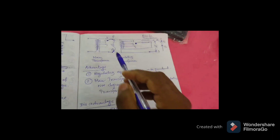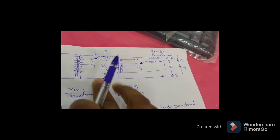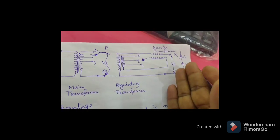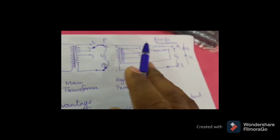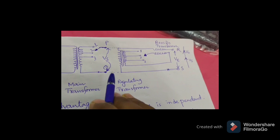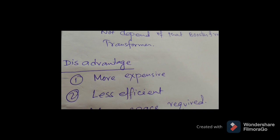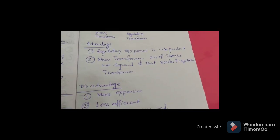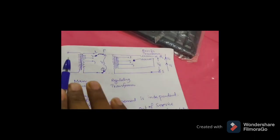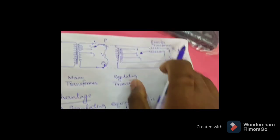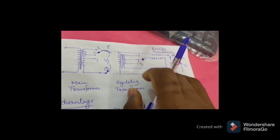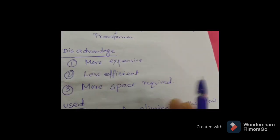There are also disadvantages. This system configuration is more expensive and also less efficient. There are more losses because the output voltage of the main transformer has no losses, but due to the far line, lots of voltage drops and power losses occur. Additionally, more space is required — we must install the main transformer, then far away install the regulating transformer, and also connect the booster transformer in series. So lots of space is involved in this configuration.